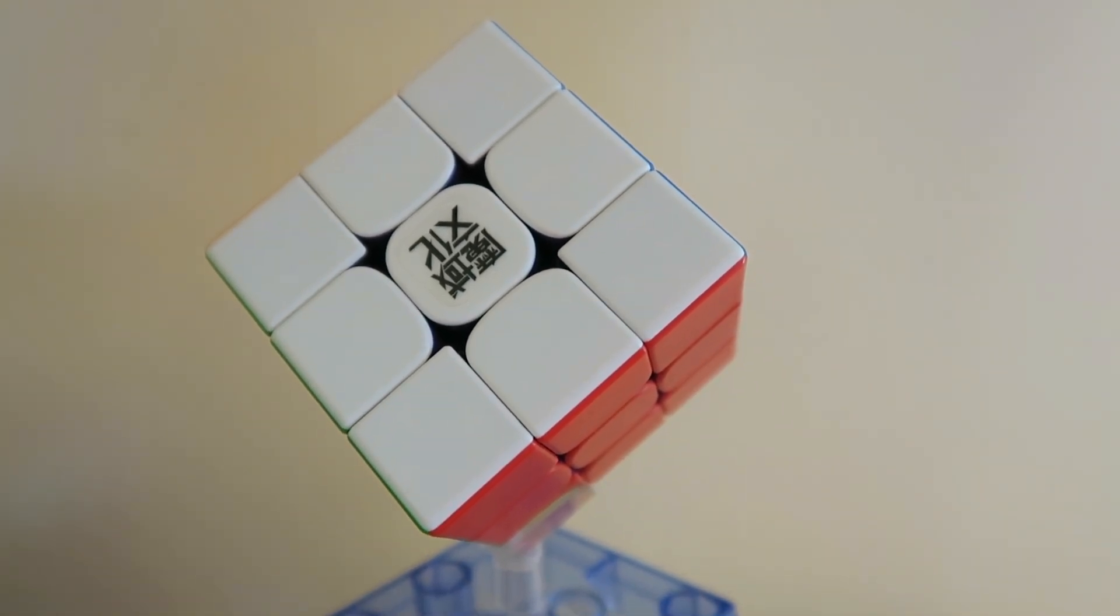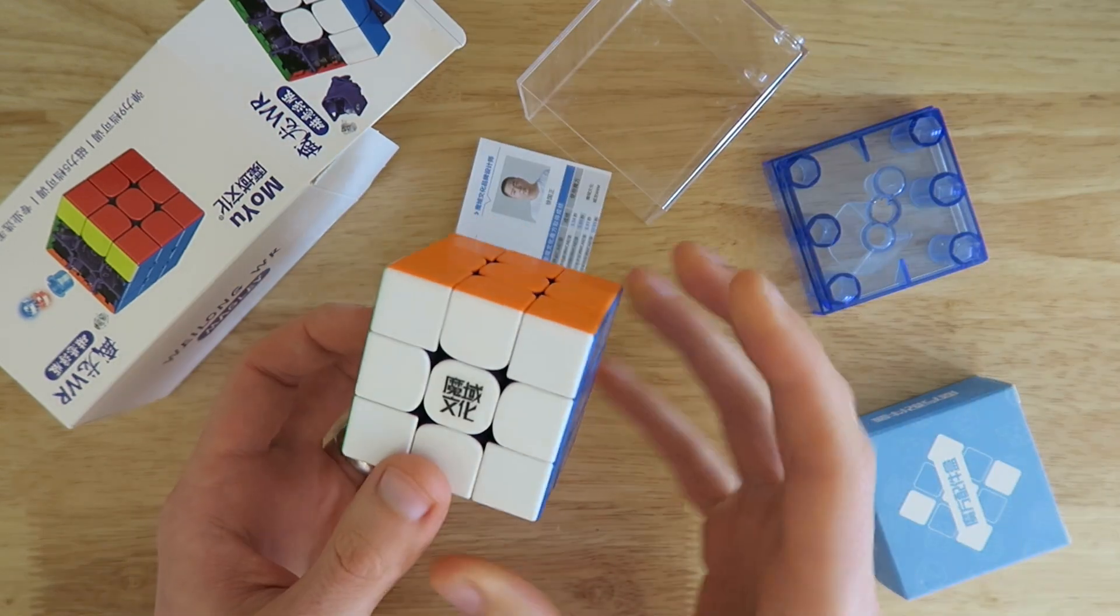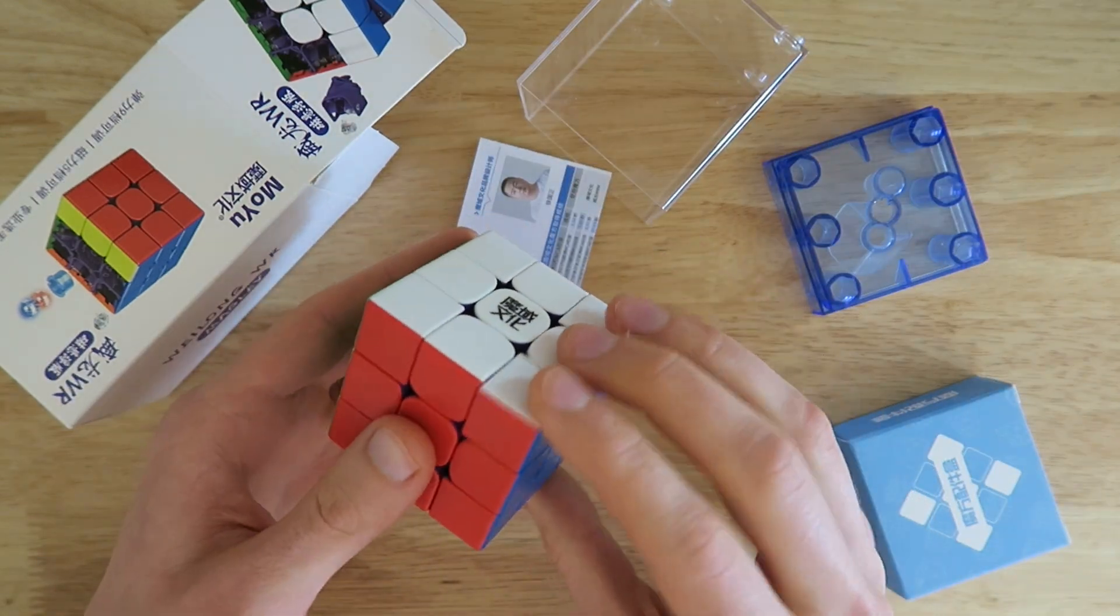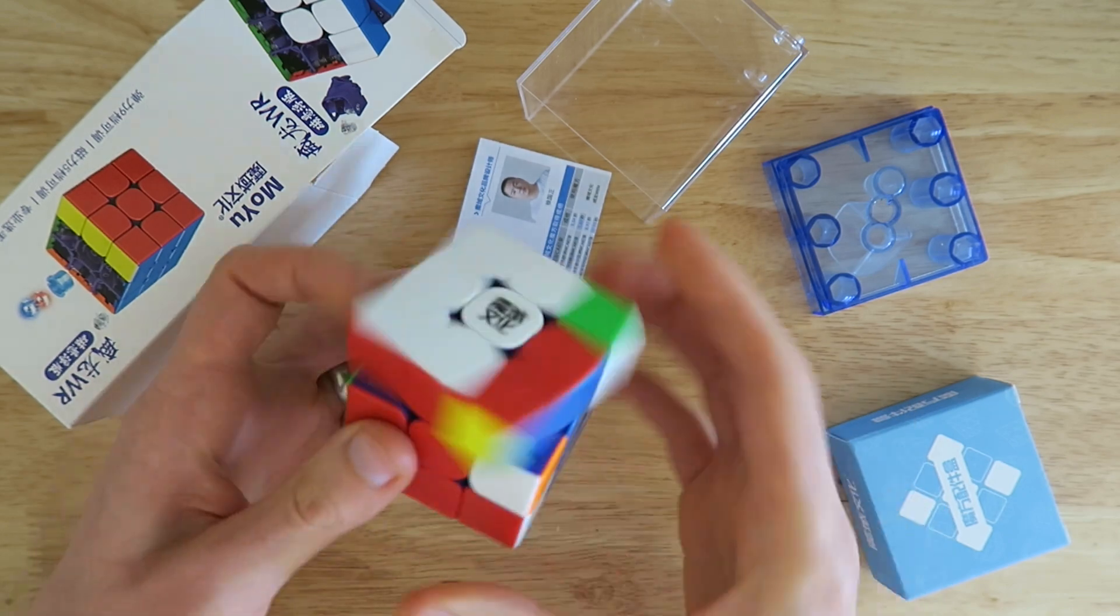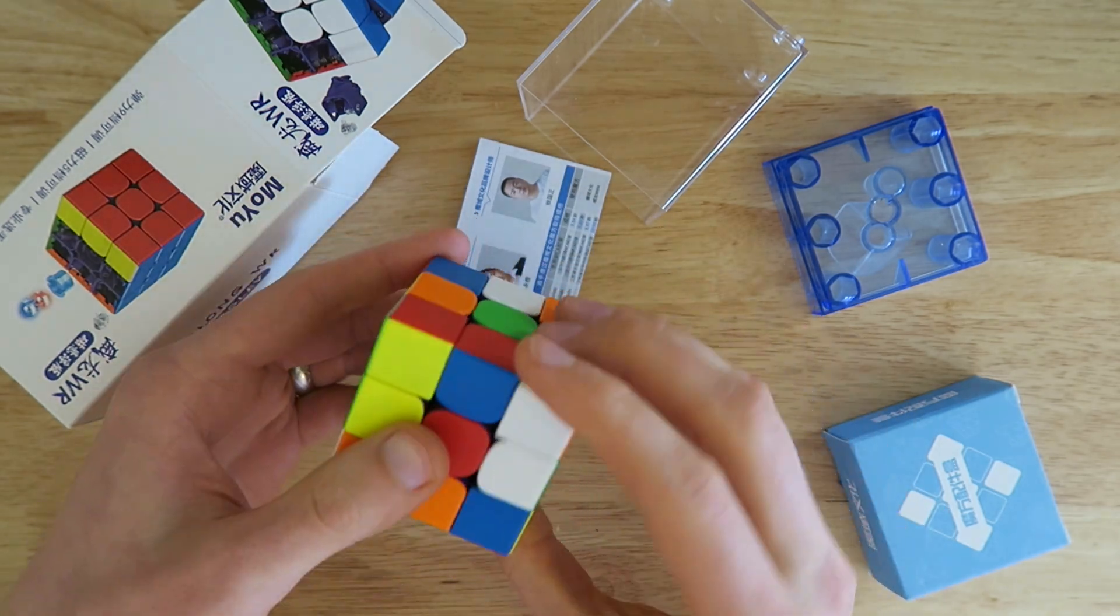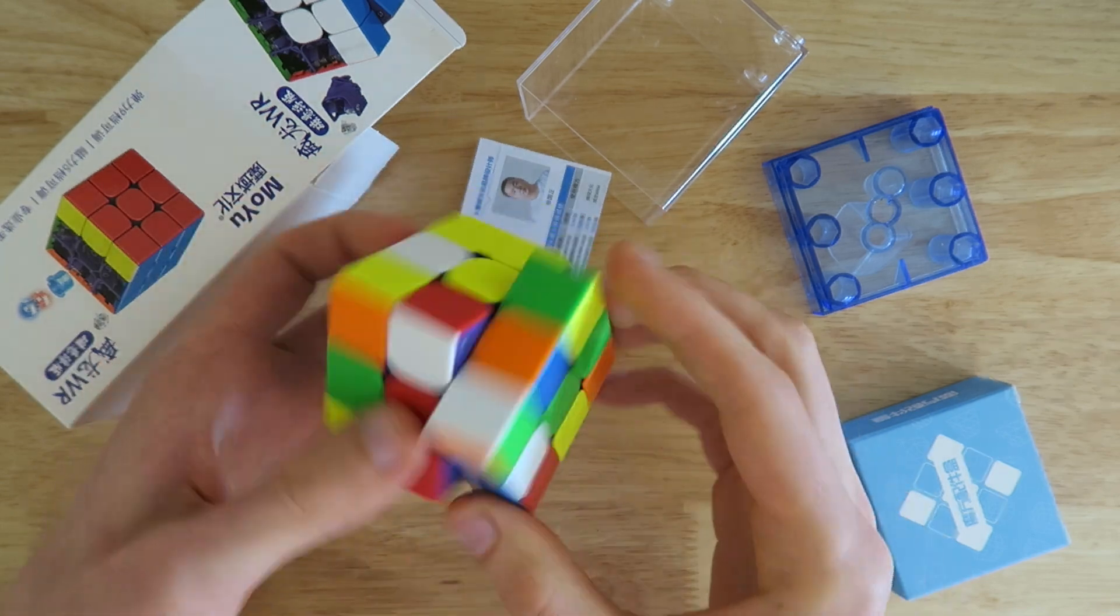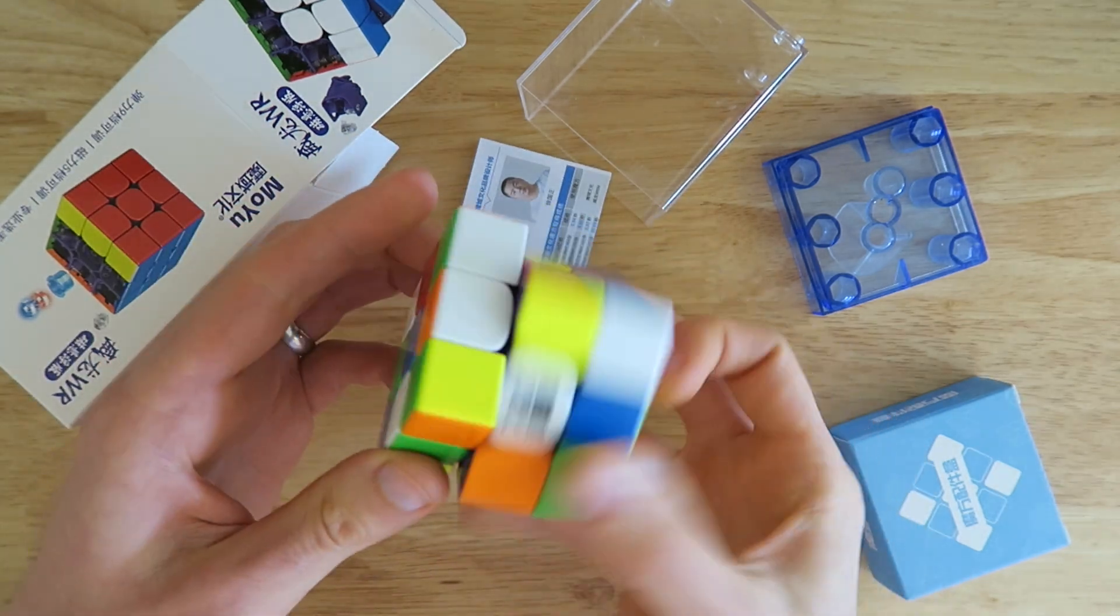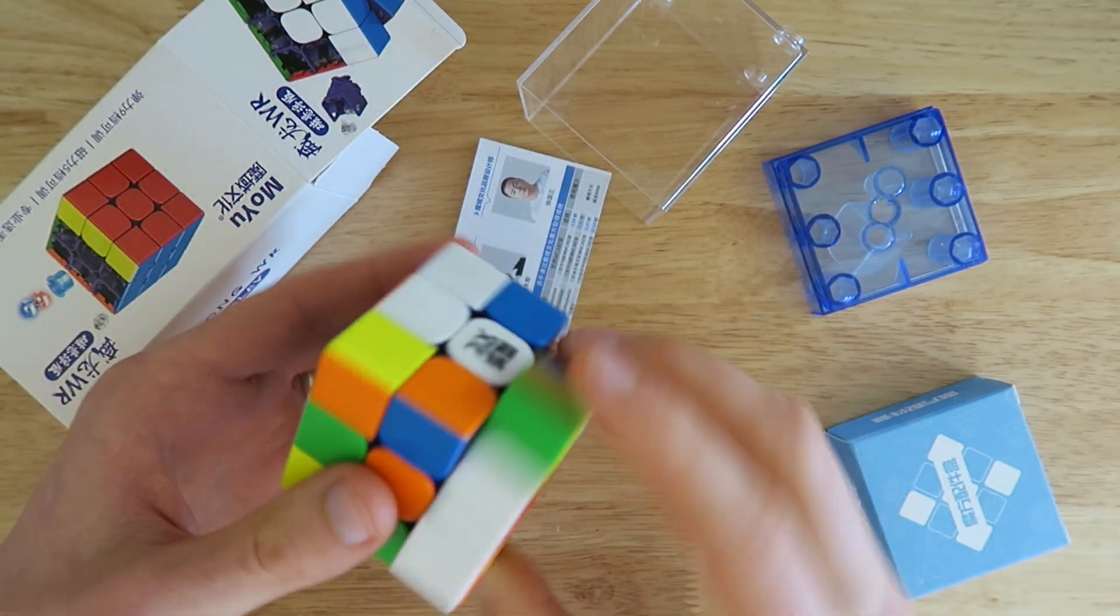So before we do anything, let's take a look at my first turns on this puzzle. Let's just do some first turns with this. Alright, interesting. Alright, so this is really smooth. It's a very fast puzzle. Right out of the box, it's kind of slippery I guess.